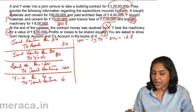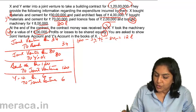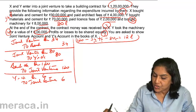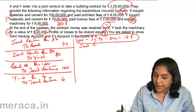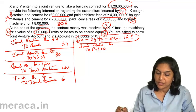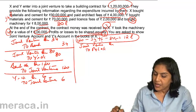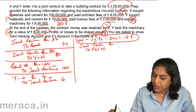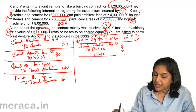The entry for profit and loss: since there is a profit, the joint venture account will be closed with the share of profit. Joint Venture Account debit to Profit and Loss Account. Profits are shared equally, so X's share of profit is 6 lakhs and Y's share of profit is 6 lakhs.